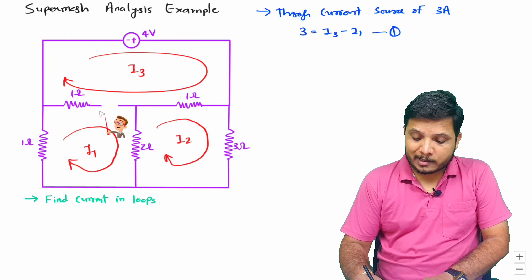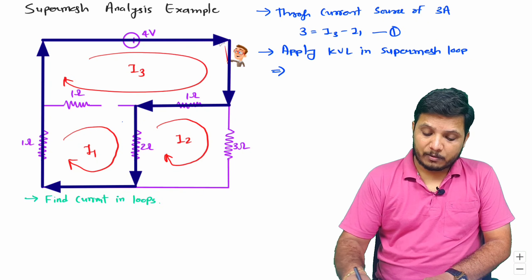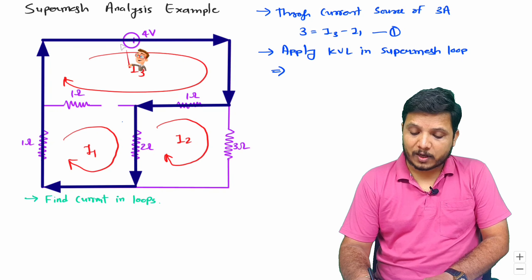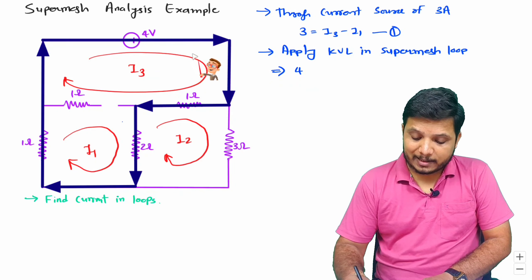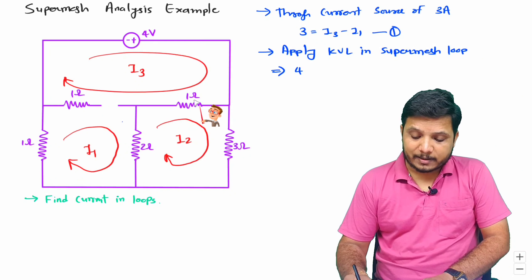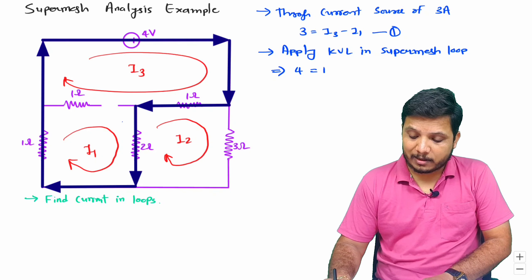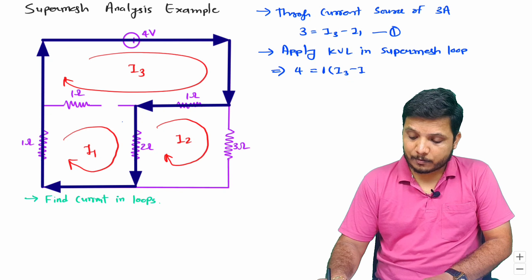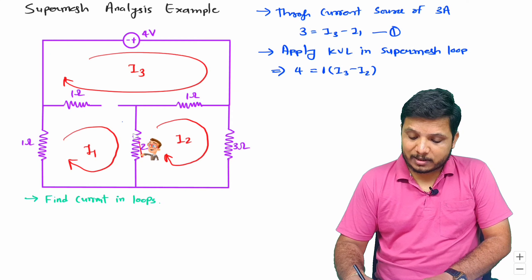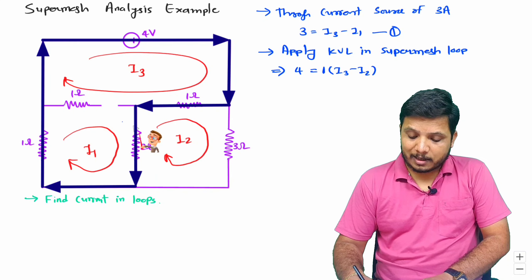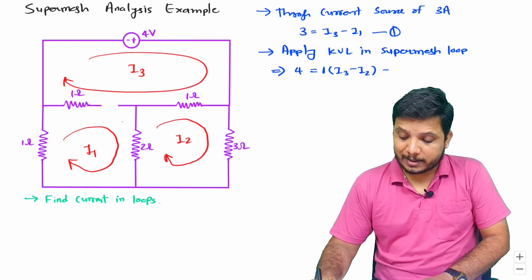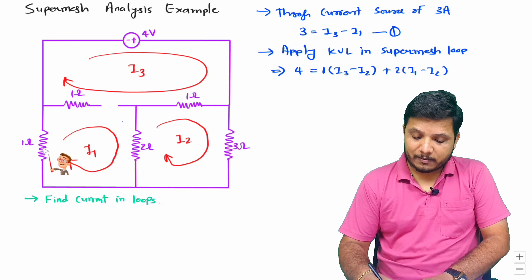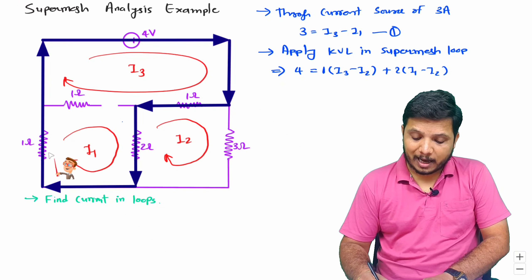Let us apply the super mesh loop first. In this loop we need to see how many voltage sources there are. The voltage source is four volts in this loop, going from minus to plus, so I write plus four volts. That equals the voltage drops across elements. First, this one ohm resistance comes, with current I3 minus I2 in this loop, so I write one times (I3 minus I2). Then this two ohm resistance comes, with current I1 minus I2, so I write two times (I1 minus I2). In this loop, this one ohm resistor has current I1 flowing through it, so I write I1 times one.